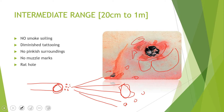They are called satellite wounds because they resemble satellites around a planet — for example, Earth — the planet here being the central irregular-shaped hole.